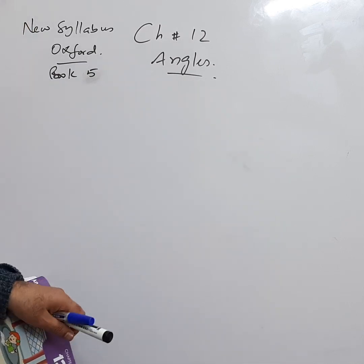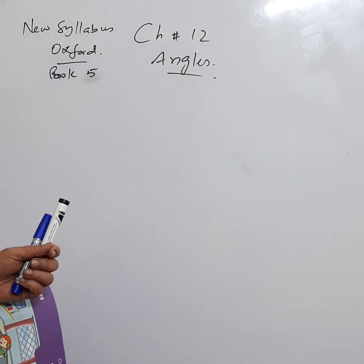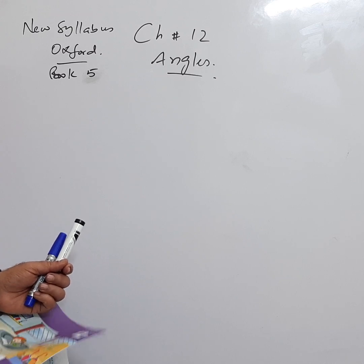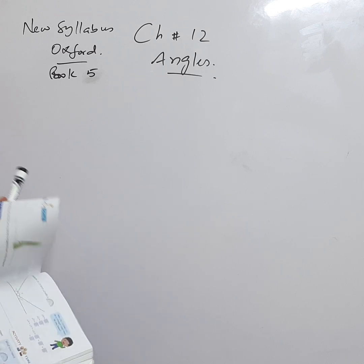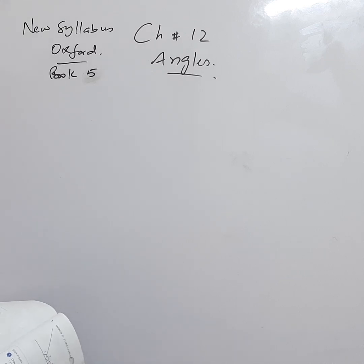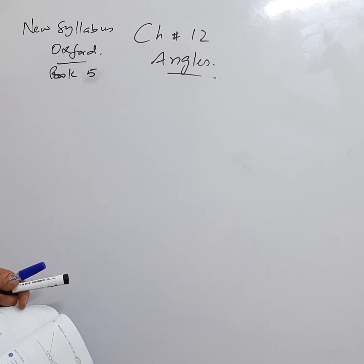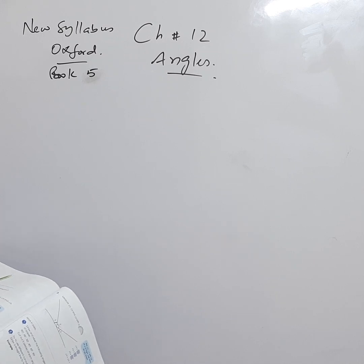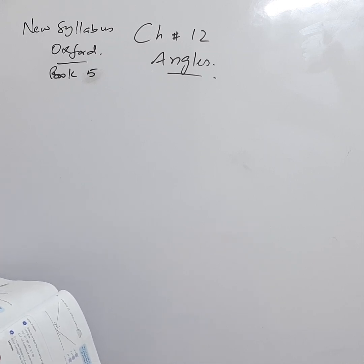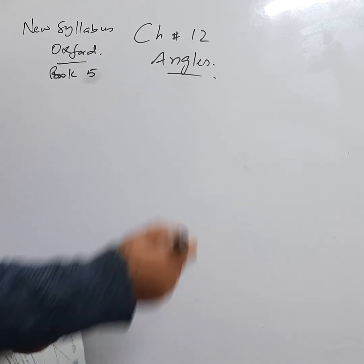So far we have studied what is an angle, what is a vertex, and how to name an angle. The next topic is angles on a straight line.